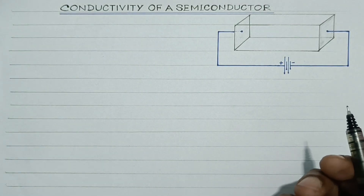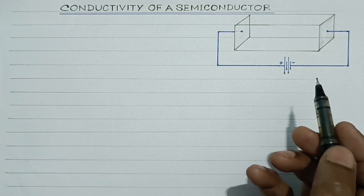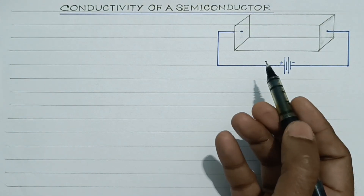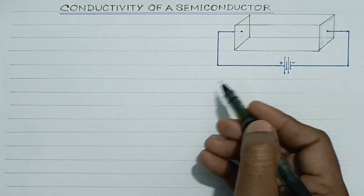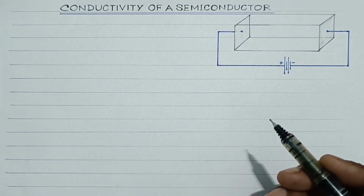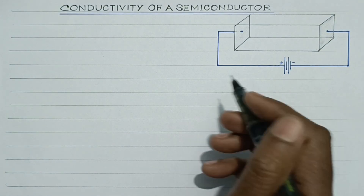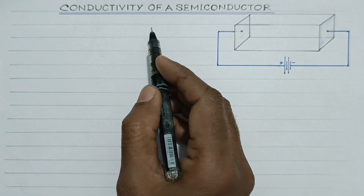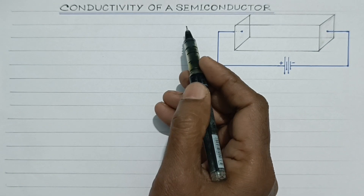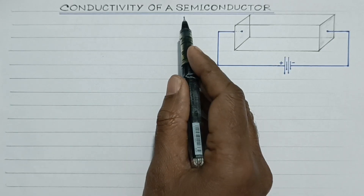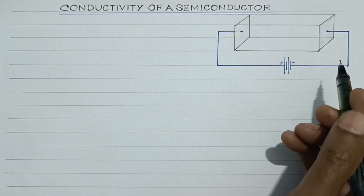In this session, we will discuss the electric current in intrinsic semiconductor. In the process, we will derive an expression for the resistivity and the conductivity of a semiconductor.